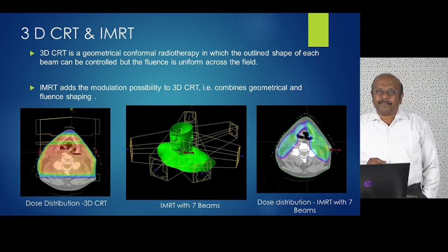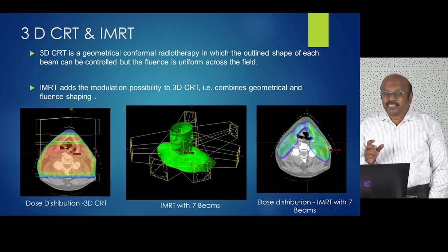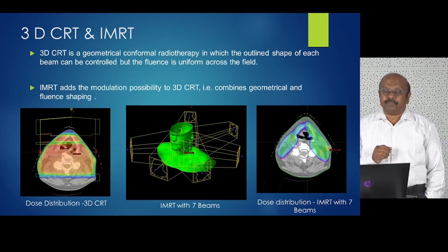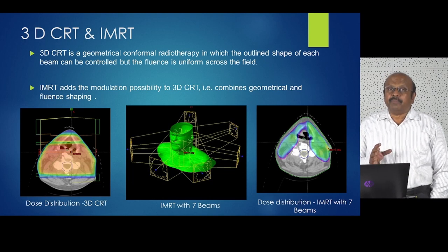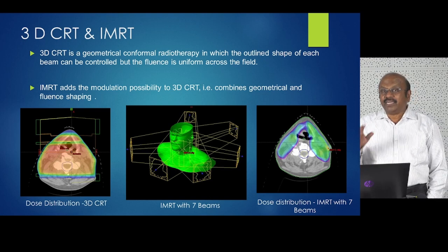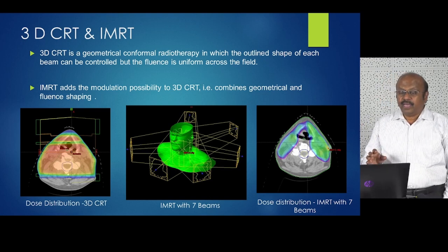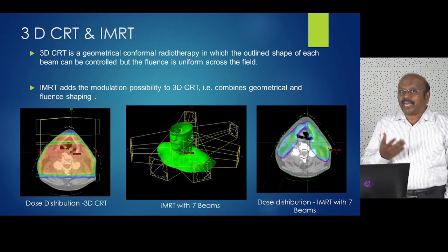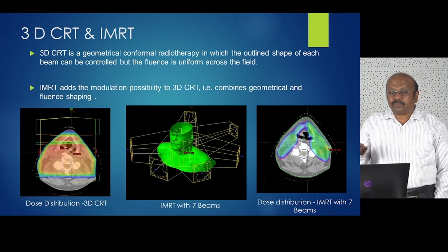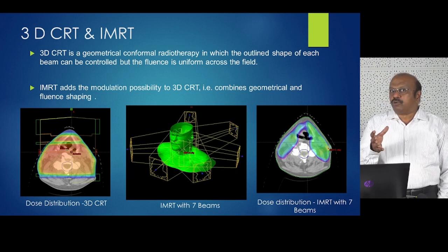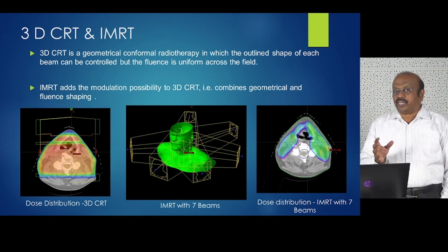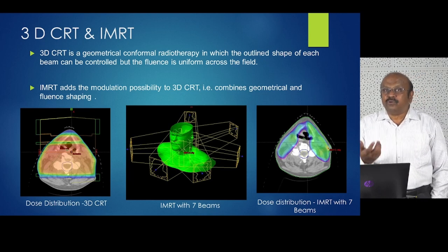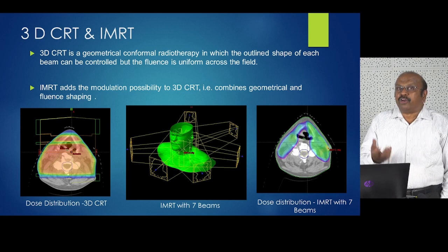Let us do a small comparison between 3D CRT and IMRT. 3D CRT is a geometrical conformation of radiotherapy in which the outline shape of each beam can be controlled, but the fluence is uniform. IMRT adds modulation — a fluence map — to 3D CRT, combining both geometrical and fluence mapping. The geometry shape is similar to 3D CRT but it also adds intensity modulation to the beam.